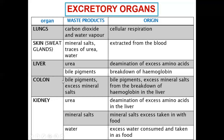The kidney excretes three major things: urea, mineral salts, and water — these make up the composition of urine. Urea results from the deamination of excess amino acids in the liver, meaning removal of the amino group from a protein. Mineral salts are removed when the body has too high a concentration of salts.